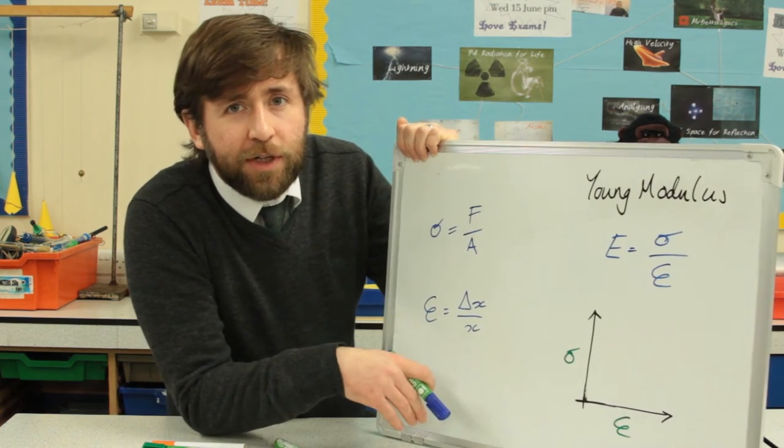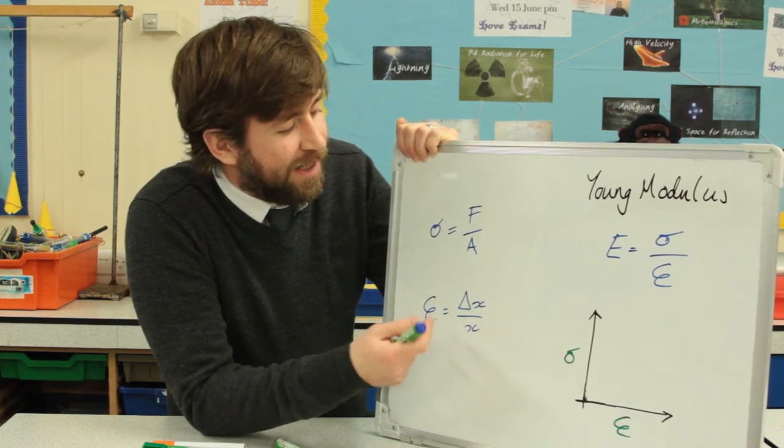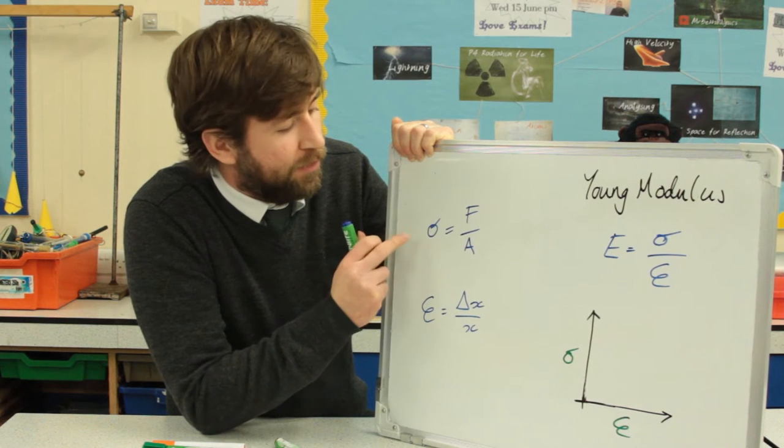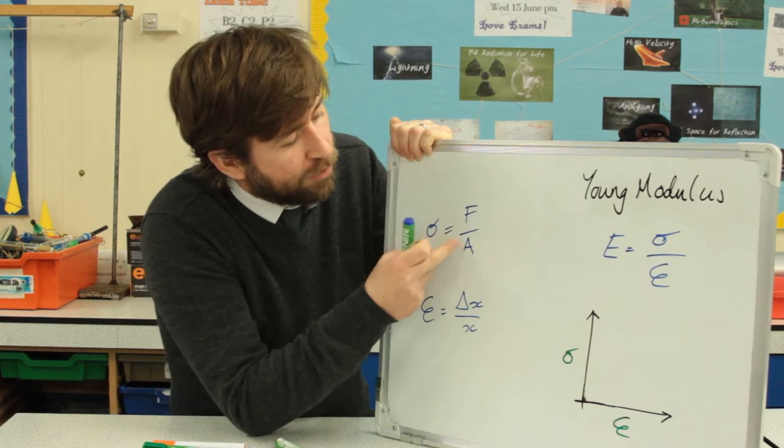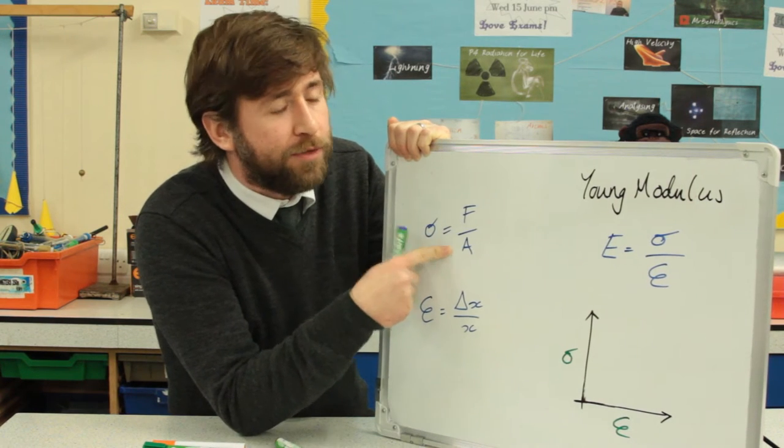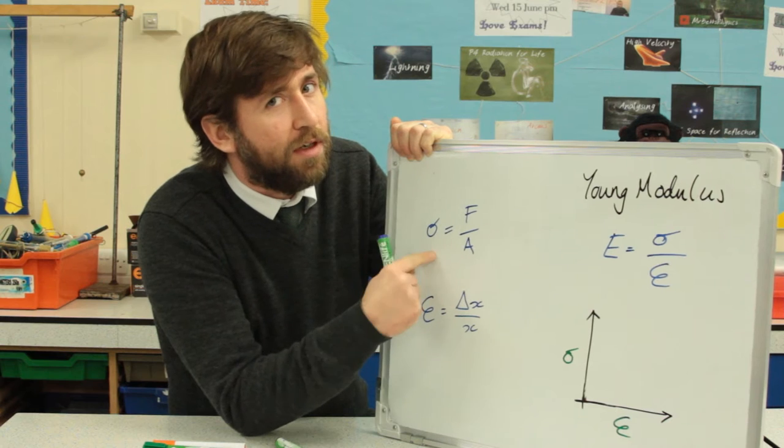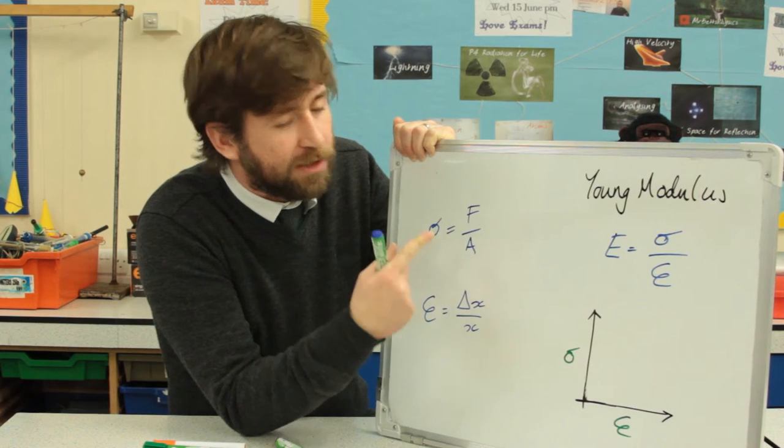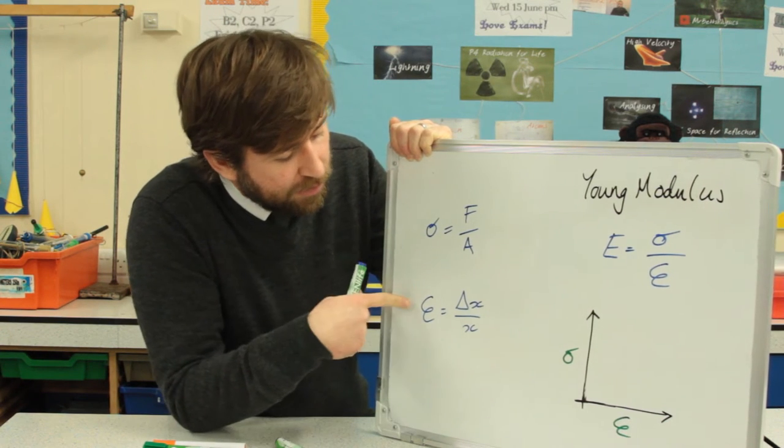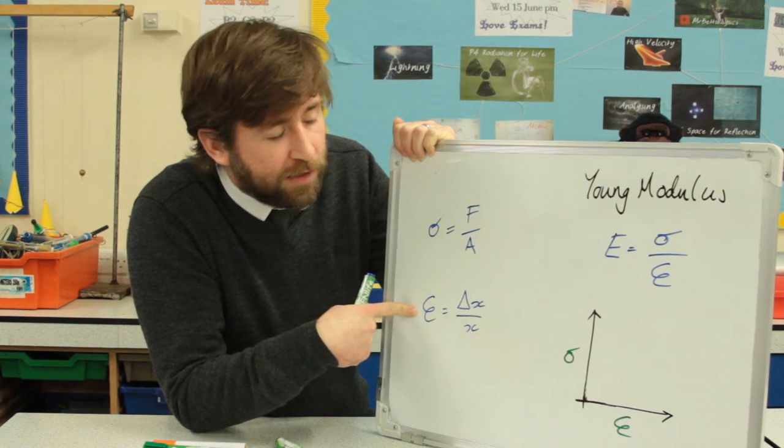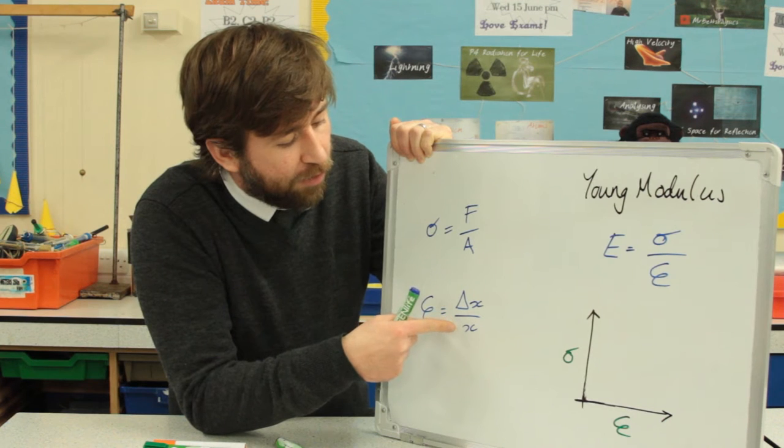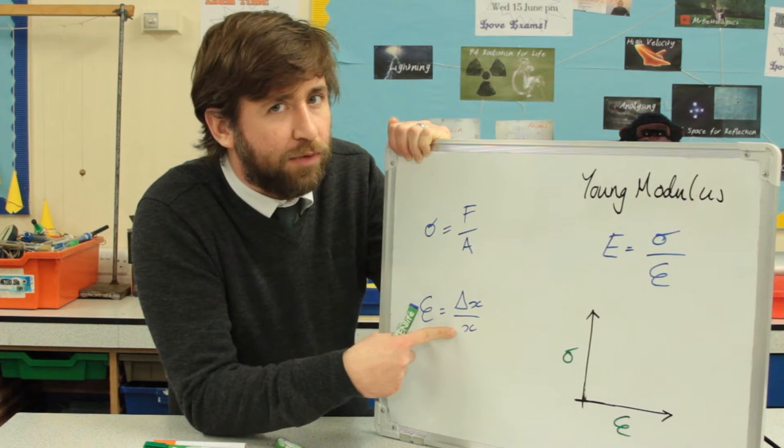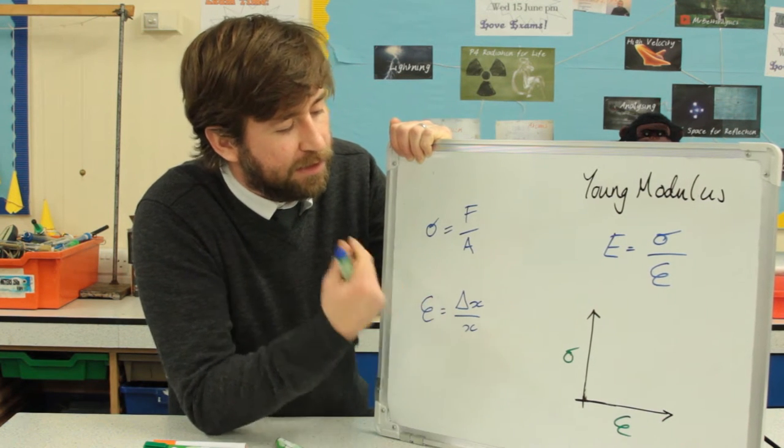So the first thing we're going to need to understand then is exactly what stress and strain are. So σ is the symbol for stress, it's a force over a cross-sectional area, so it's an internal pressure, if you like, in a material. It does actually have the same units as pressure. Strain is defined as the percentage change or the ratio of change of length, so x is the original length and Δx is the change in length.